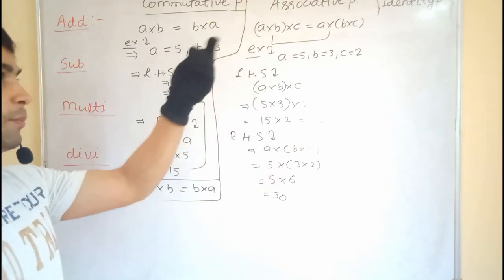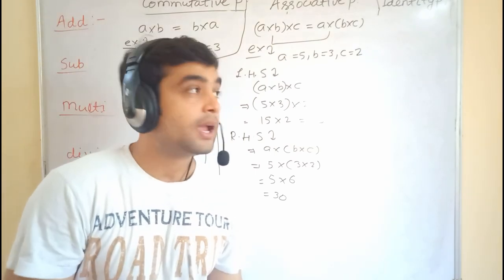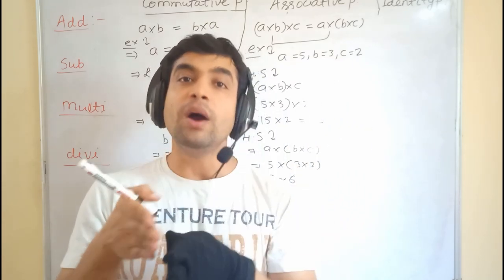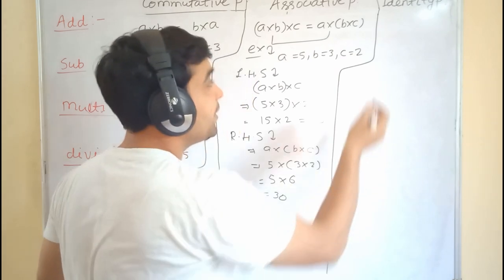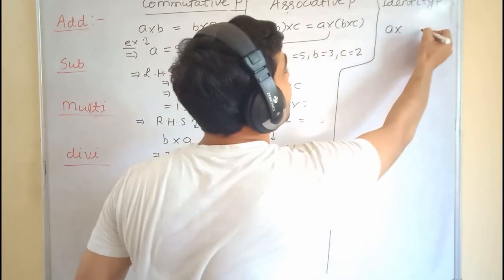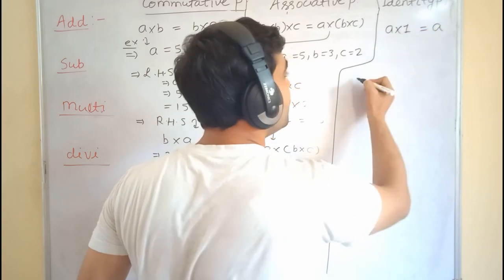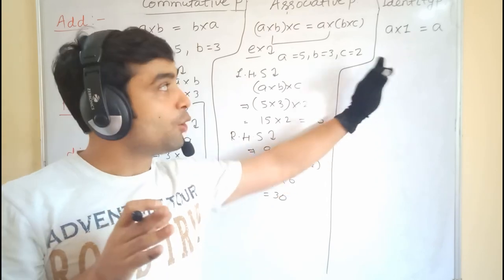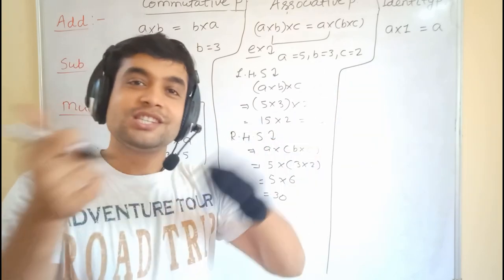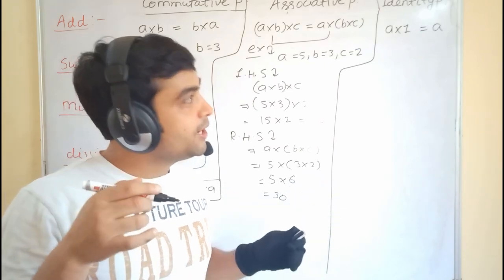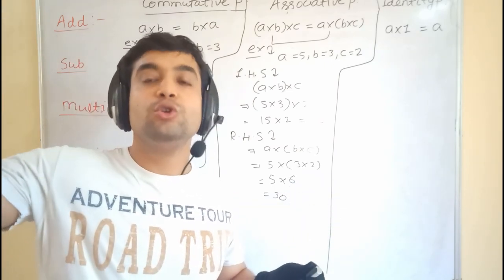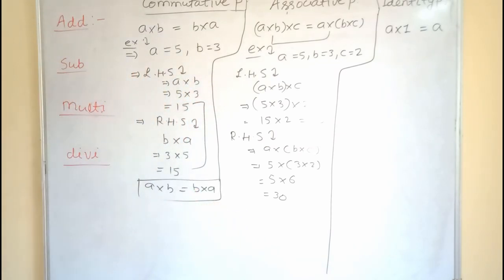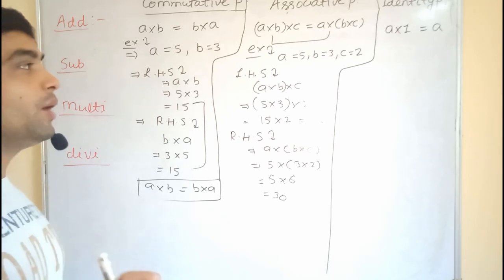Now we move to the third property for multiplication: identity property. Identity property is not a property to check; it tells us what the multiplicative identity is for any number. That particular number, when multiplied, gives the same number back. That number is 1. So 1 is the multiplicative identity for any number — for example, 1001 multiplied by 1 remains 1001.